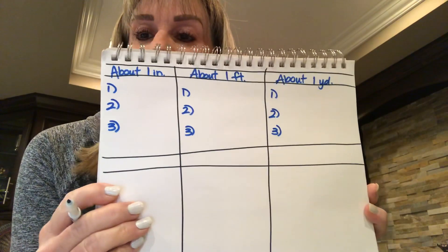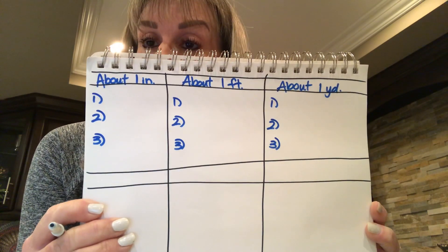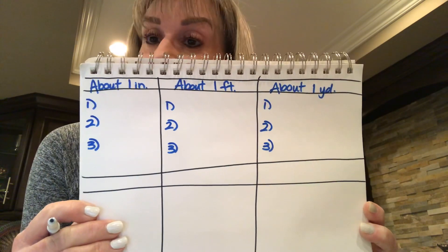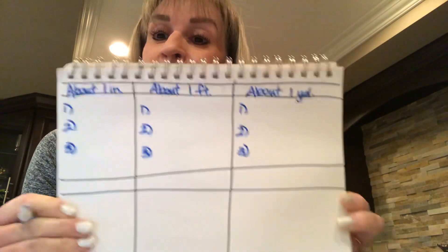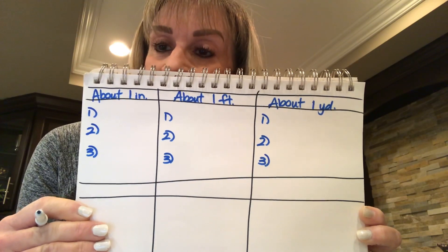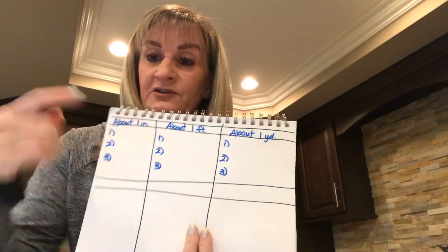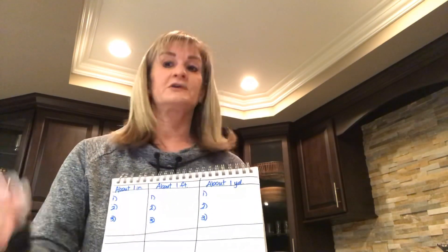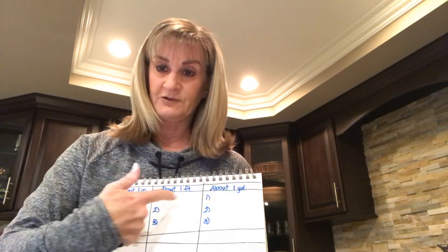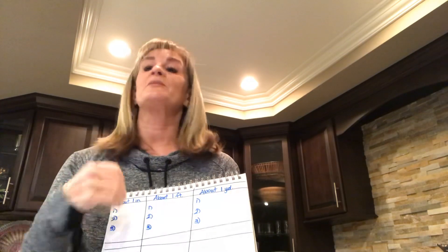Once you set your paper up, your job is to go find things in your house or around your house. If you can't find something, you could get on a FaceTime call with a grandparent or a cousin and say, "Hey, do you have anything in your house that's about a foot long?" and do a little comparing. Now, those are our standard units we use in the United States — inches, feet, yards. If you go outside the United States to Canada, to Europe, anywhere else, they don't use inches, yards, and feet. They use the metric system, which is all based on zeros.